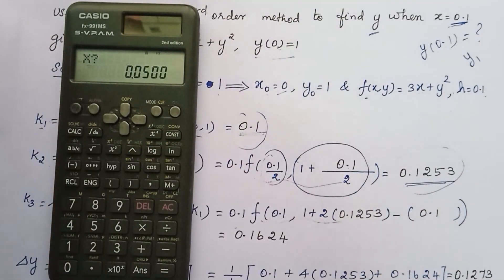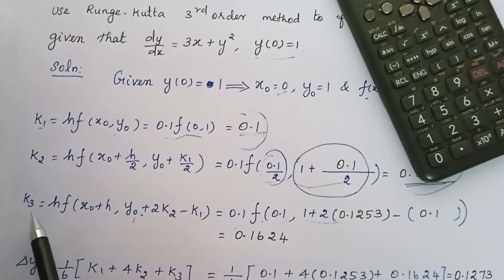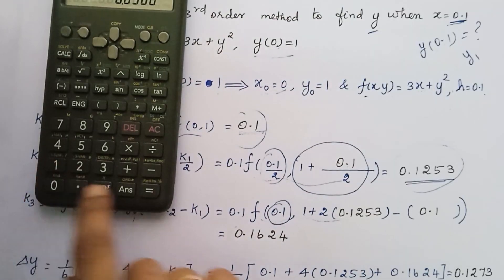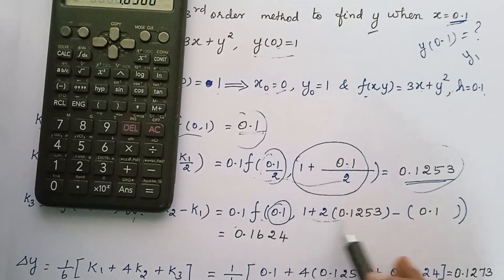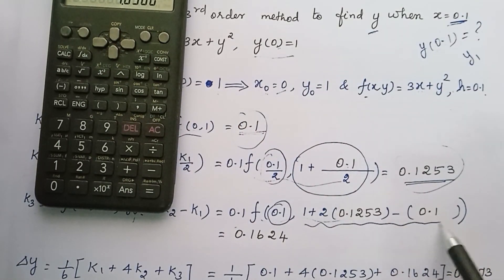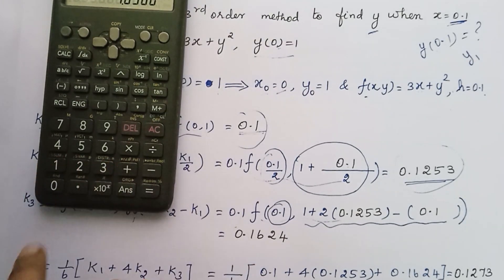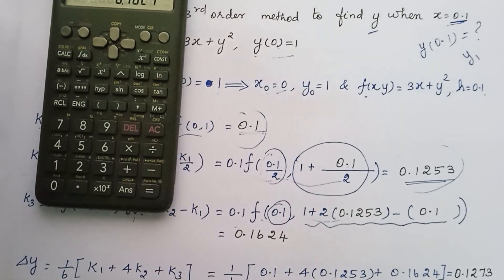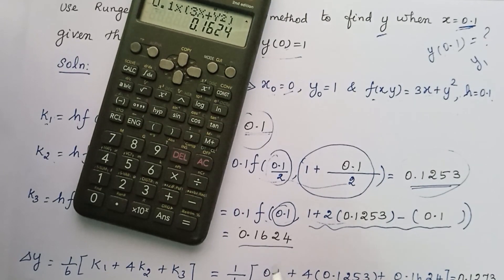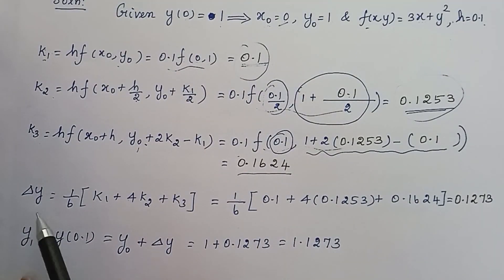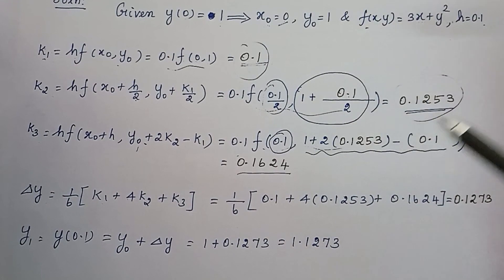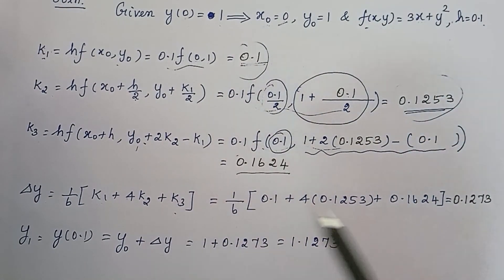Then calculate K3. Press clc. Enter x value — in the K3 formula, in the place of x, 0.1 is used. Enter 0.1, press equal. Then enter y value. In the place of y, we substitute: 1 plus 2 into 0.1253, then minus 0.1. Press equal, and the K3 answer is 0.1624. Next, calculate delta y using the formula: (1/6) times (K1 + 4·K2 + K3). Substituting K1, K2, K3 values and simplifying gives delta y = 0.1273.